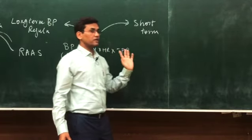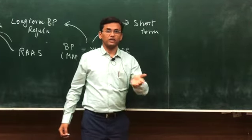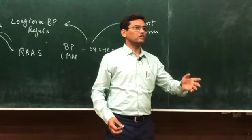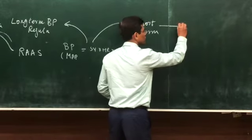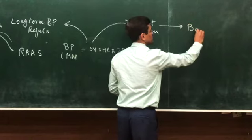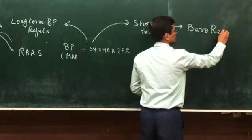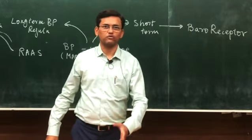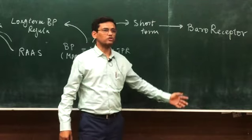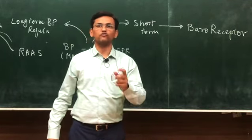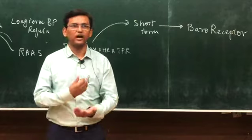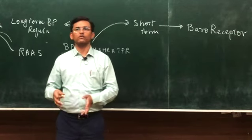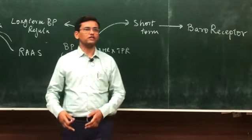The short-term, second-to-second blood pressure mechanism — whether sitting, standing, moving, or running — is controlled by a system called the baroreceptor system. This is the topic of today's lecture. It is a very important topic because a very common exam question is to explain the regulatory mechanisms of blood pressure, both short-term and long-term.